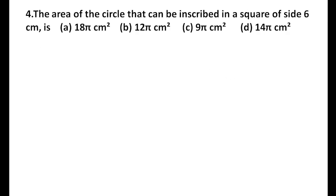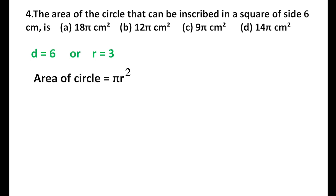Fourth question: the area of the circle that can be inscribed in a square of side 6 cm. Since the circle is inscribed in the square, the diameter equals the side length of the square. So diameter = 6 cm, meaning radius = 3 cm. Area of the circle = πr² = π × 9 = 9π. Our option is C.